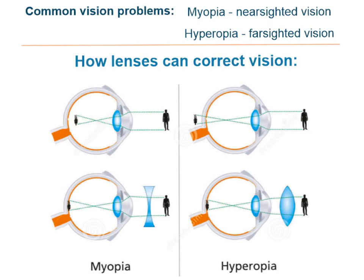Now if we look at a different problem — hyperopia, or farsighted vision — in that case distant objects can be seen clearly but near objects are blurry. The reason for this is that maybe the eyeball is too short, or the muscles that adjust the shape of the lens cannot adjust it properly to focus the image. In the hyperopic eye, the image is projected beyond the retina instead of on it.